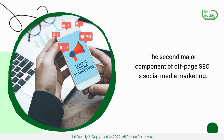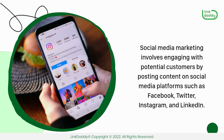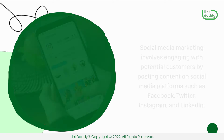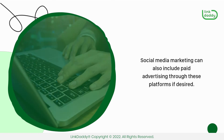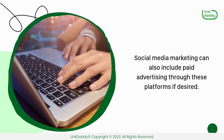The second major component of off-page SEO is social media marketing. Social media marketing involves engaging with potential customers by posting content on social media platforms such as Facebook, Twitter, Instagram, and LinkedIn. It also includes participating in discussions related to your brand or industry through comments or direct messages, and can include paid advertising through these platforms if desired.